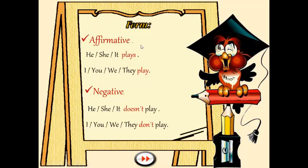The structure. When we work with affirmative sentences, we have to pay attention that the verb acquires only two forms. With he, she and it, we are going to have the verb with an ending in S. While with I, you, we and they, only the verb is used as it is given, without the S.